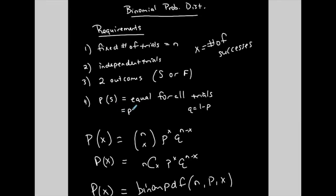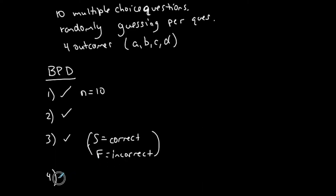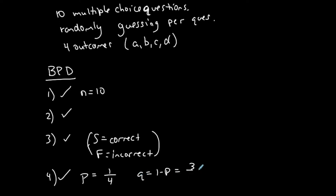The fourth requirement is that the probability of success is equal for each trial. Since success is a correct answer and only one out of four possible answers is correct, p equals one-fourth. Therefore q, which is one minus p, equals three-fourths. This probability stays the same for each question, so all four requirements are met — this is a binomial probability distribution.